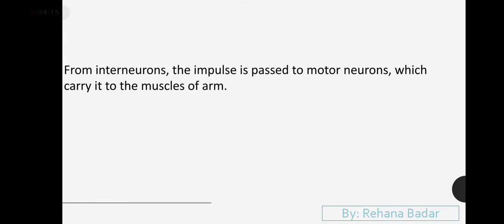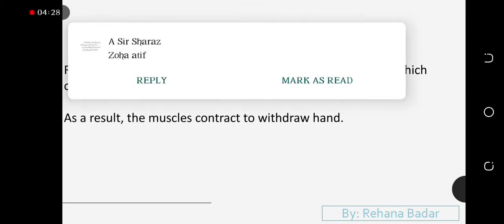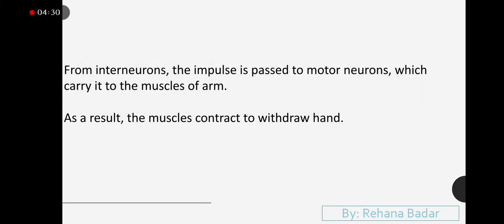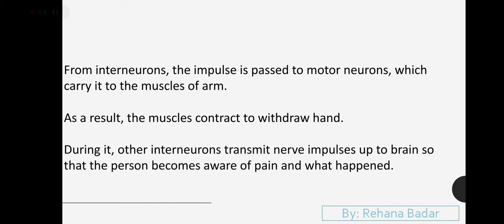From interneurons, the impulses are passed to motor neurons. Motor neurons carry the signal to the muscles of the arm. As a result, the muscle contracts to withdraw. Meanwhile, other interneurons transmit nerve impulses so that the person becomes aware of the pain.